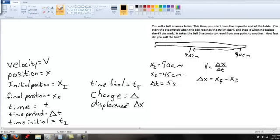The final position is 45 centimeters. The initial position is 90 centimeters. Here's where the importance of this lesson comes in. If we take 45 minus 90 centimeters, it is not 45 centimeters. The answer is negative 45 centimeters.